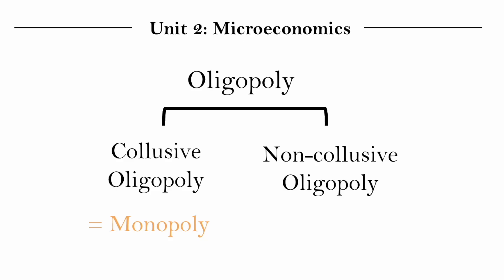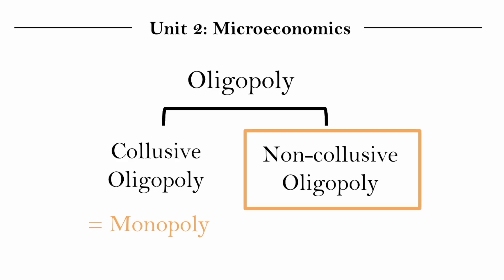We ended the last video explaining one form an oligopoly could take, which was a collusive oligopoly that functions like a monopoly. Today we're going to take a look at a non-collusive oligopoly, where firms are not illegally cooperating with each other.